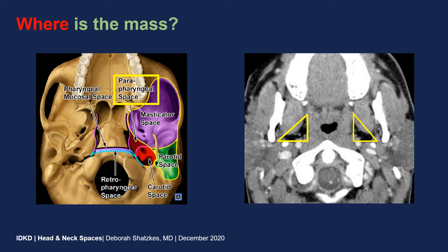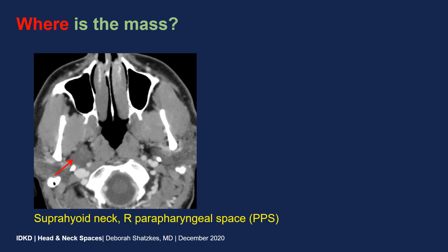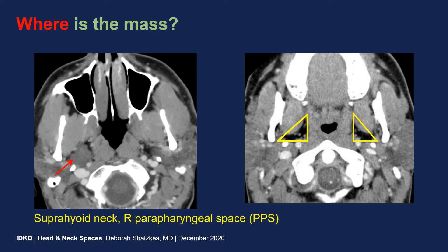If we look at a CT image, the parapharyngeal spaces are triangular-shaped, fat-containing spaces lateral to the pharynx. We can see muscles of mastication, the pterygoid muscle anterior to it, and then the parotid space posterolateral to it. Going back to our image, we can see that this lesion is actually lying in the parapharyngeal space — lateral to the nasopharyngeal mucosal space, medial to the parotid gland, and behind the medial pterygoid muscle. So we're going to place this mass in the suprahyoid neck and the right parapharyngeal space, abbreviated as PPS.